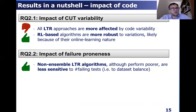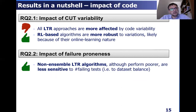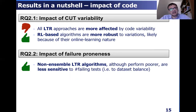In terms of failure proneness, non-ensemble algorithms — which also perform poorer as seen in RQ1 — are less sensitive to the number of failing tests. So they perform acceptably both under balanced datasets and under unbalanced datasets.